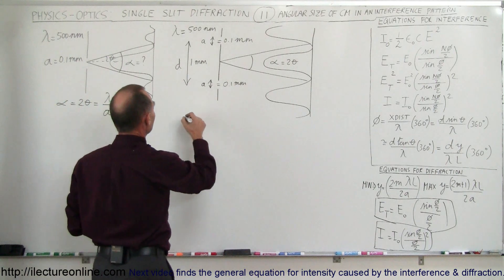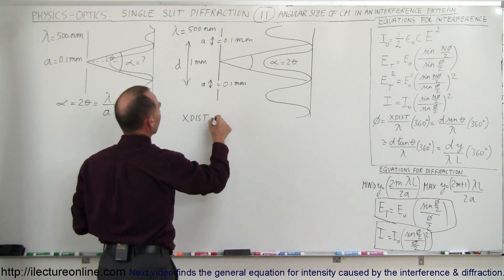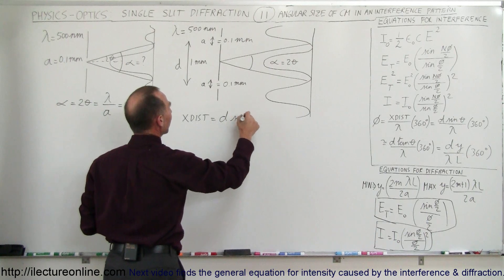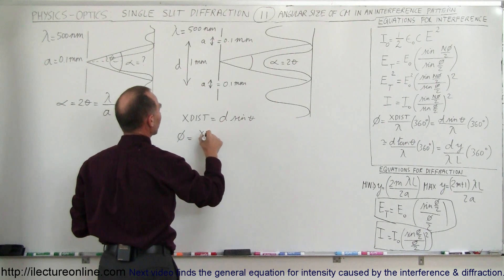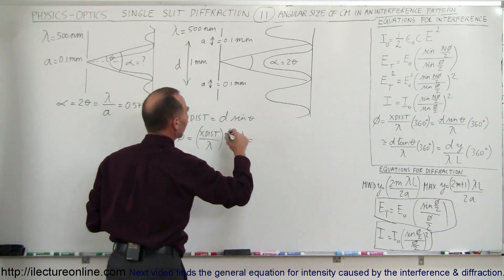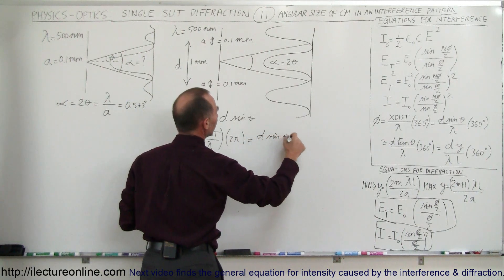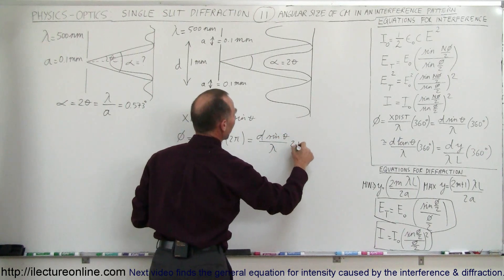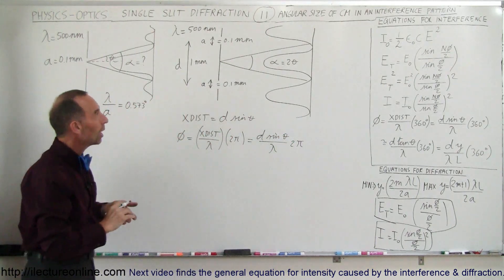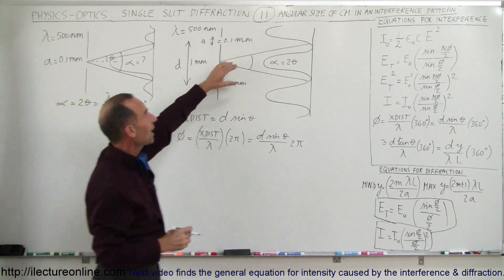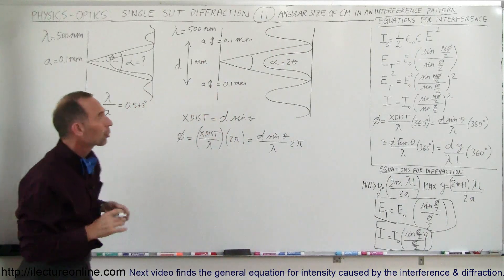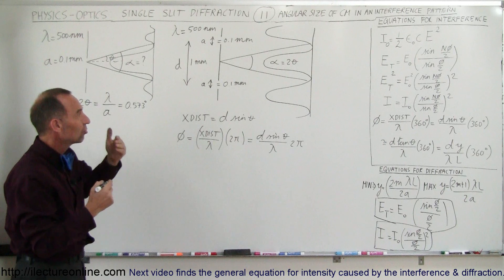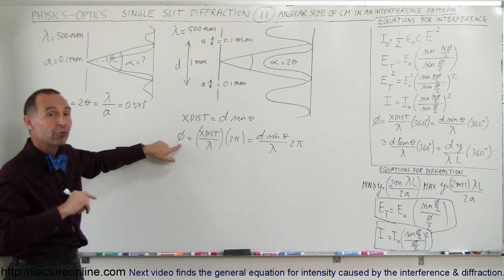What is the angular width of the central maximum in the interference pattern for this double slit? The extra distance traveled is d sine theta, and the phase angle equals the extra distance divided by the wavelength times 2π, so the phase angle equals d sine theta divided by lambda times 2π. The minimum occurs when the phase difference equals lambda over 2.